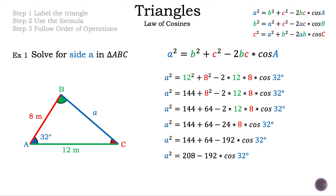Now we use a calculator to find an approximation: A² ≈ 47.83. Make sure your calculator is in degrees, otherwise you will get a different answer. We are solving for side A, not A squared, so we need to eliminate the square by taking the square root — the inverse operation.